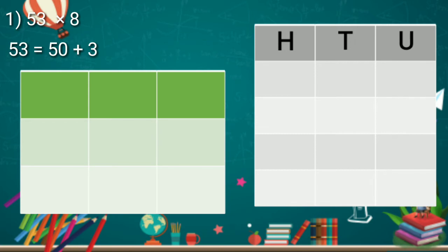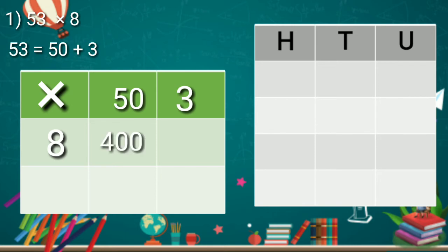So, we write expanded form of 53. 50 plus 3. Now, we are going to arrange this number in box. First, multiply 50 by 8. We get 400.